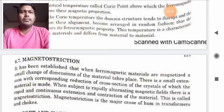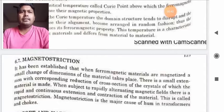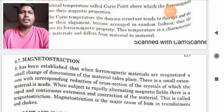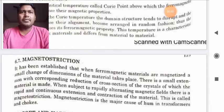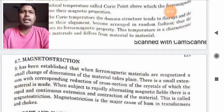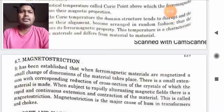There is a small extension with corresponding reduction of cross-section of the crystals of which the material is made. When subject to rapidly alternating magnetic fields, there is a rapid and continuous extension and contraction of the material.